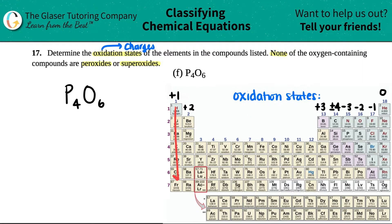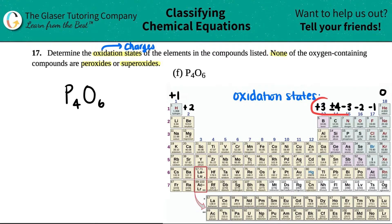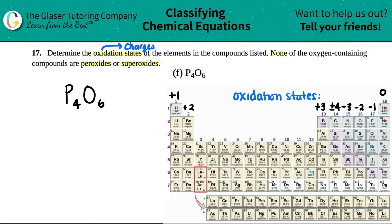Basically, everybody in group one wants to be a plus one charge — it wants to lose one electron. Group two normally loses two electrons, plus two. The trend continues: plus three, plus or negative four, then you get into negatives where you gain electrons, and finally the noble gases are zero. For a more in-depth explanation, check out number 16A in the playlist.